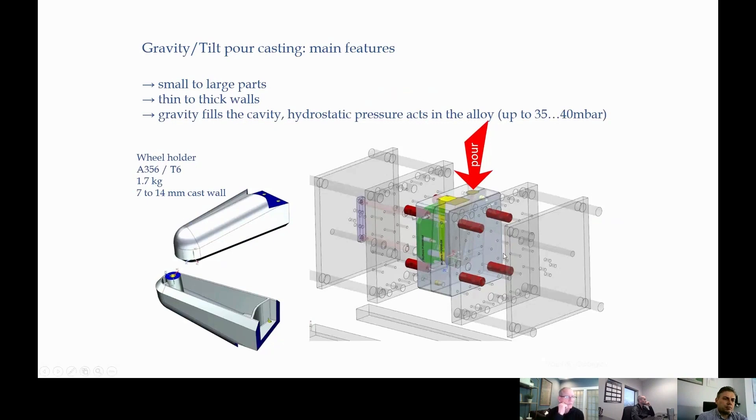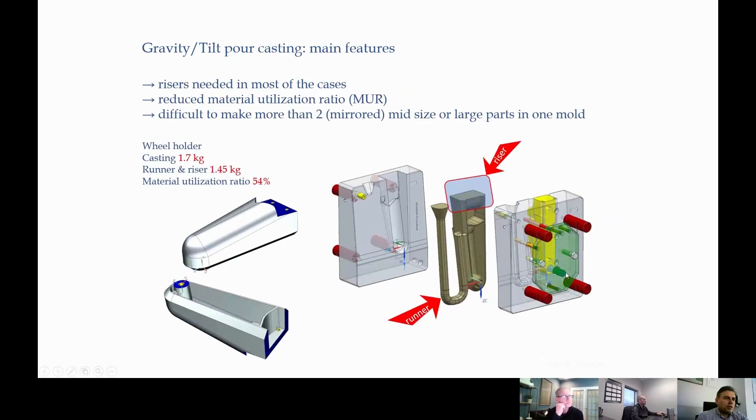On the right you see the machine that made this part. It's a basic machine, like a hydraulic station with vertical plates. We have the mold attached and we pour from the top. Then we open the mold and we get the part. It has a runner, which provides the metal inside, and also it has a riser, because without the riser we cannot get good parts. We will get shrinkage inside. So considering the weight of the casting and the runner and the riser, finally we are able to use only 54% of the aluminum that we pour in the mold.